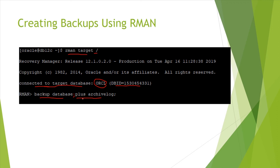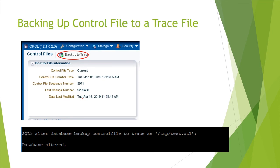The backup location is the Fast Recovery Area by default. You can also perform a 'backup controlfile to trace' from Database Express or SQL. In Database Express, go to Storage > Control Files and click 'Backup to Trace'. In SQL, run 'alter database backup controlfile to trace', optionally specifying a destination. The output is a script containing SQL statements needed to recreate the control file if all control files are lost.